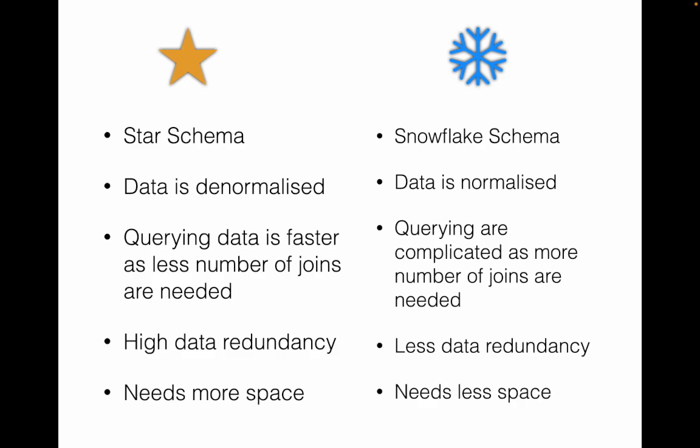Star schema cannot handle complex and dynamic dimensions that require high accuracy and data normalization. Snowflake schema can accommodate complex and dynamic dimensions and hierarchies, but its main downside is that queries become complicated, performance is hampered, and you end up with many small dimension tables that complicate data warehouse design and maintenance. Snowflake schema is fit for users who want to consume data in a drill-down fashion with high data accuracy.